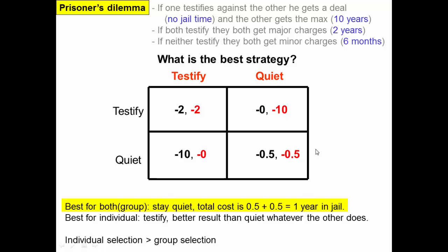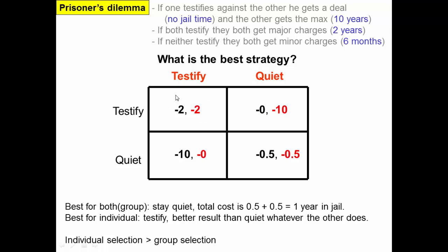The best outcome for both together would be for both to stay quiet — a total of one year in jail. But for any individual, it would always be better to testify since that gives a better result no matter what the other does. So individuals acting rationally would both testify, yielding a negative two, negative two result — four total years in jail. This is an interesting example where individual-level selection is more powerful than group selection.